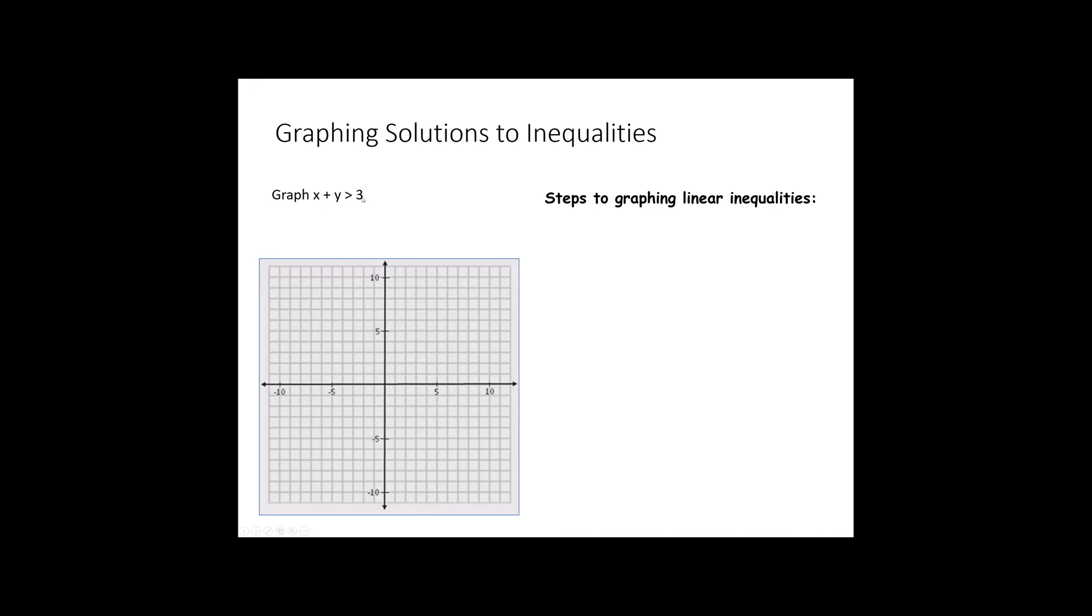Here I have an inequality. x plus y is greater than 3. Remember, there are some combinations of x and y that we could use that would be greater than 3, and there are some combinations of x and y that would be less than 3. For example, 5 plus 5 would be greater than 3, 2 plus 1 would equal 3, and negative 3 plus negative 3 would be less than negative 3. There's lots of different possibilities for x's and y's, but all of them will meet one of those three conditions: either greater than, less than, or equal to.